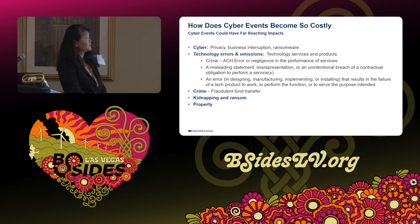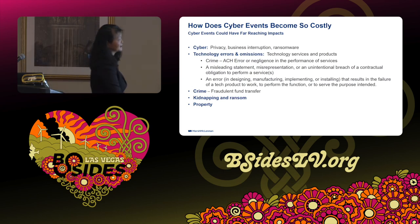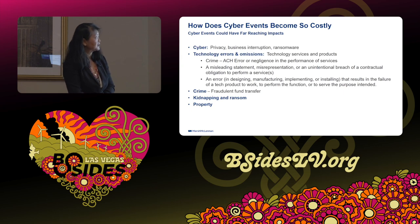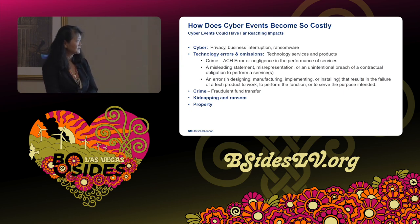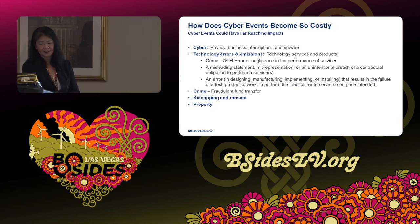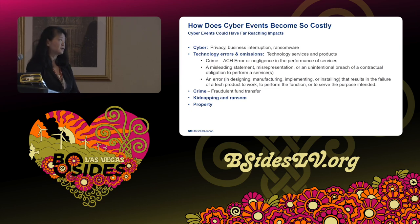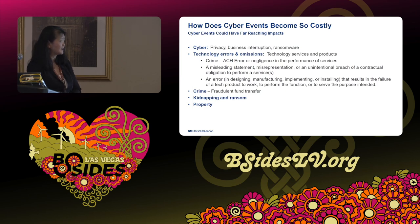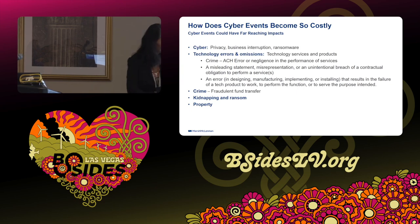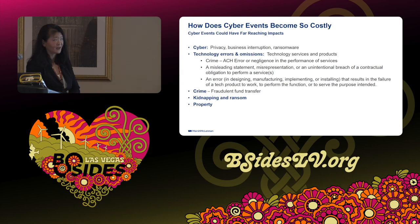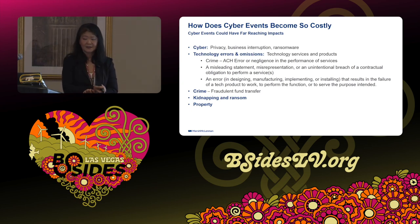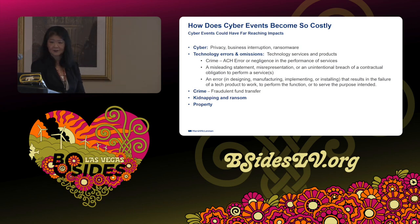To summarize how cyber events become so costly: it spans privacy breaches, business disruption, ransomware, and technology errors and omissions. Once attackers are in your environment, they can reroute funds hitting your crime policy, ransomware can simultaneously hit your cyber policy and your kidnap-and-ransom policy, and when cyber limits are exhausted it can spill into property policies — creating damages across your entire enterprise risk portfolio.